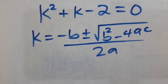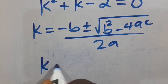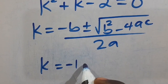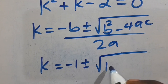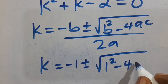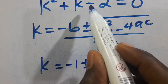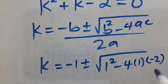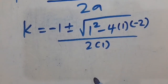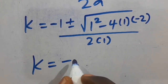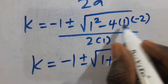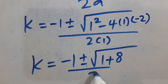From here, B is the coefficient of K, which is 1. So we have K equals negative 1, plus or minus the square root of 1 squared minus 4 times A, which is the coefficient of K squared (also 1), times C, which is negative 2. That gives us negative 1 plus or minus the square root of 1 plus 8, divided by 2.